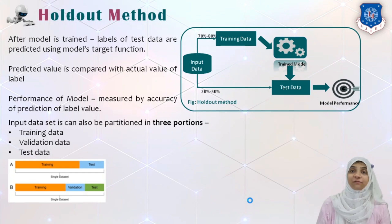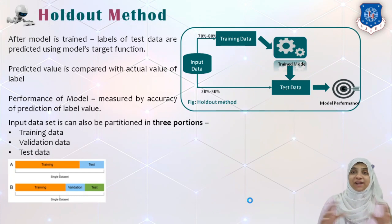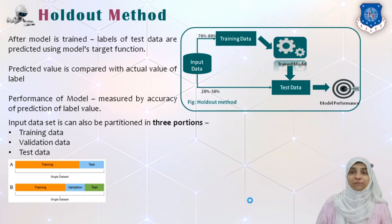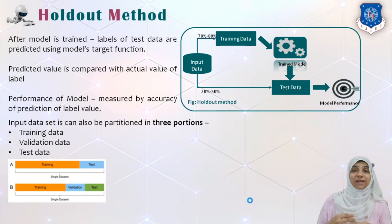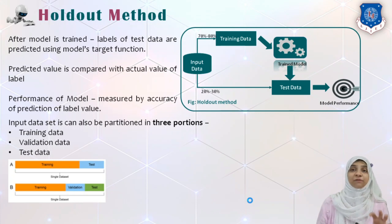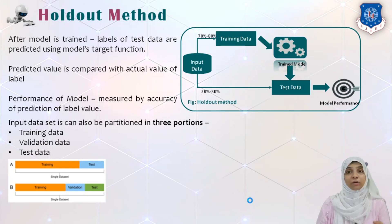In most cases, we divide our input data into three different chunks instead of two. So instead of dividing into just training and test data, we also introduce a third type called validation data. Training data is used for building the model. The model's performance is first tested against the validation dataset, and according to this validation performance, we adjust the parameters of the model.